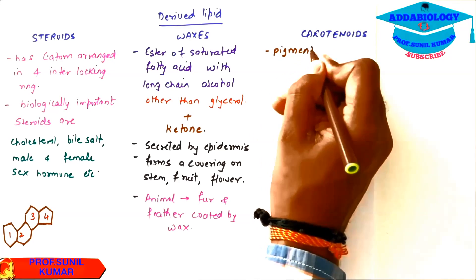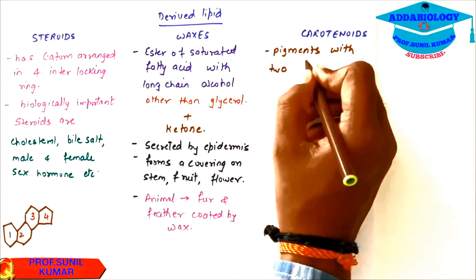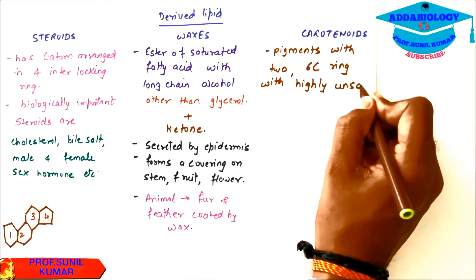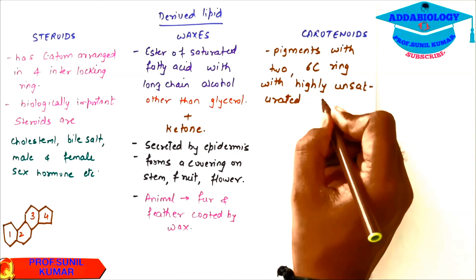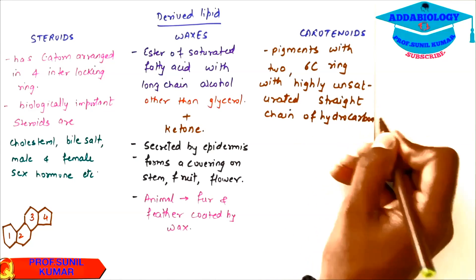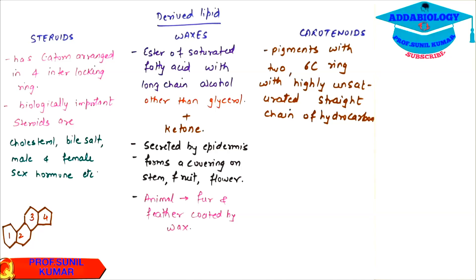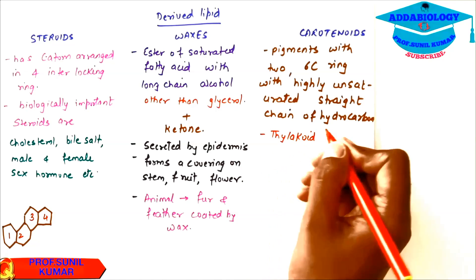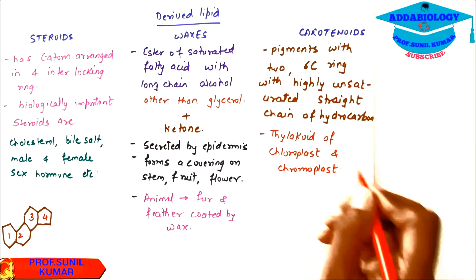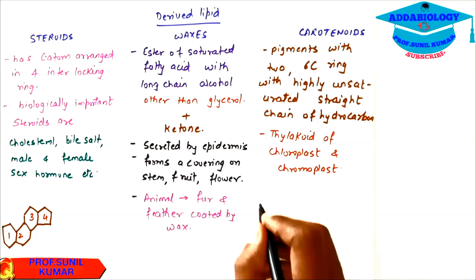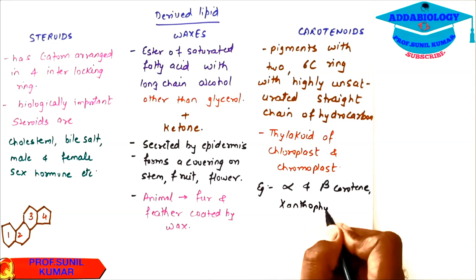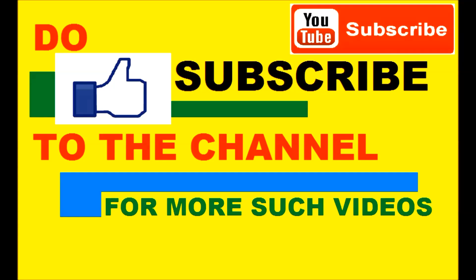When we talk about carotenoids, these are the pigments with 2,6 carbon ring with highly unsaturated straight chain. The most important thing for carotenoids is that they are 2,6 carbon ring, but they are highly unsaturated straight chain of hydrocarbons. It is found in thylakoids of chloroplast and chromoplast. Examples are alpha and beta carotenoids and xanthophyll. Alpha and beta carotene are orange and xanthophyll is yellow in color.